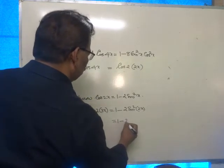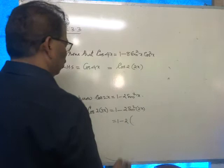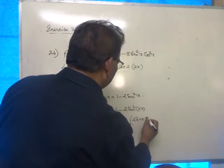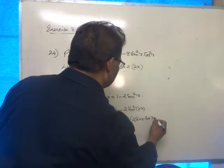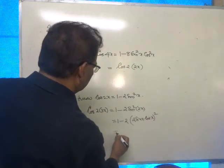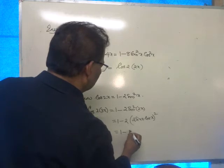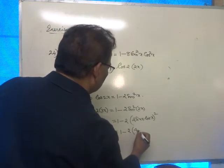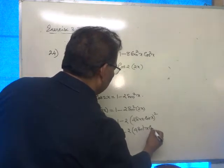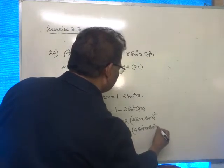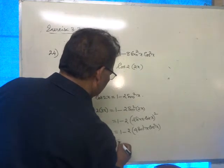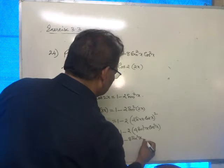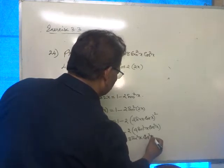That's equal to 1 minus 2 into 2 sin x cos x, all squared. That's equal to 1 minus 2 into 4 sin squared x cos squared x, which is equal to 1 minus 8 sin squared x cos squared x.